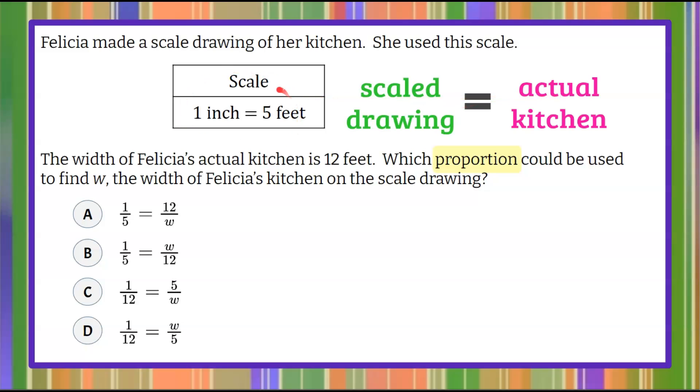So here's our scale ratio. One inch is the scale drawing equal to five feet in the actual kitchen. So we're going to use that ratio of one inch for the scale drawing and five feet to the actual kitchen to write our proportion.